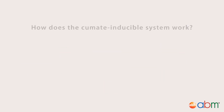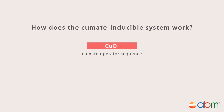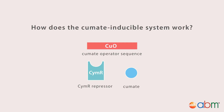How does the cumate inducible system work? There are three elements involved: the cumate operator sequence, also known as CUO, the SIMR repressor, and the inducer itself, cumate.